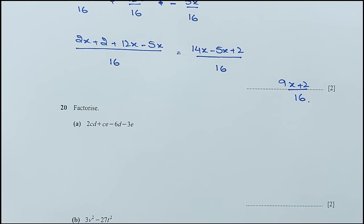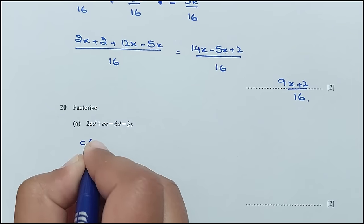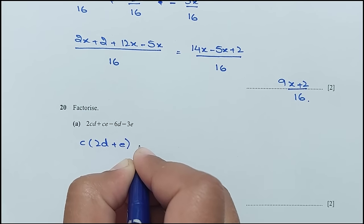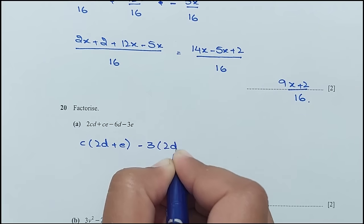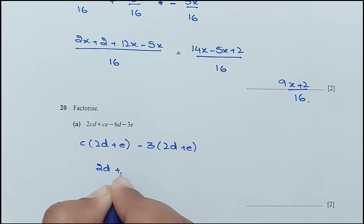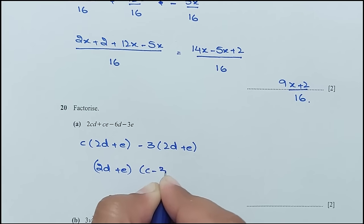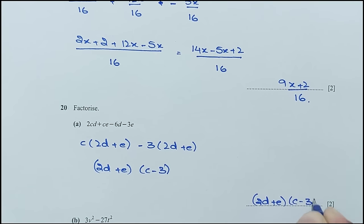Question number 20, part A: taking C as a common factor, we are left with (2d + e), and minus 3 is also common giving (2d + e). So the factors are (2d + e)(c minus 3).